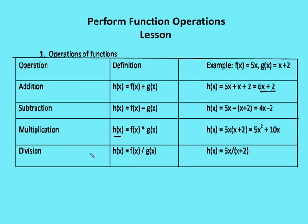And then finally, division. I have h of x is equal to f of x divided by g of x. In this case, very simply, I have f of x, which is 5x, over x plus 2. I can't simplify it any further, so I leave it as it is. These four operations are very straightforward — we'll give you different values for f of x and g of x. Let's talk about now composition of functions, and after this we'll go through some practice problems.